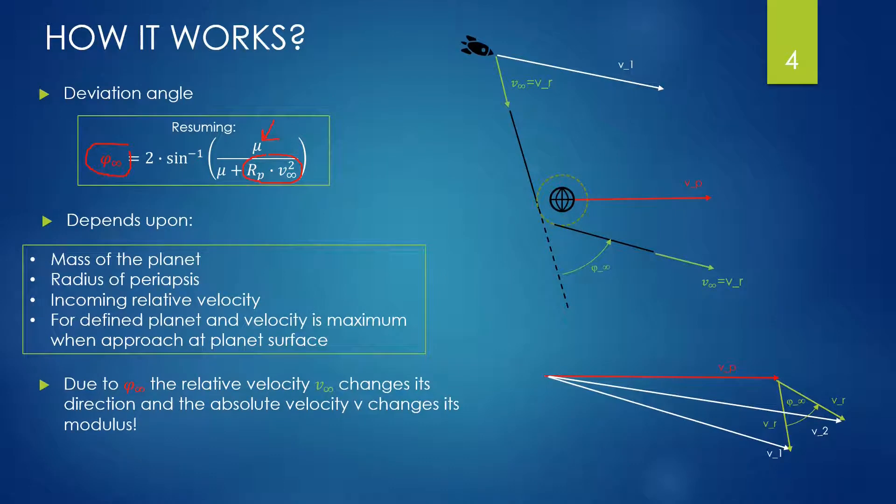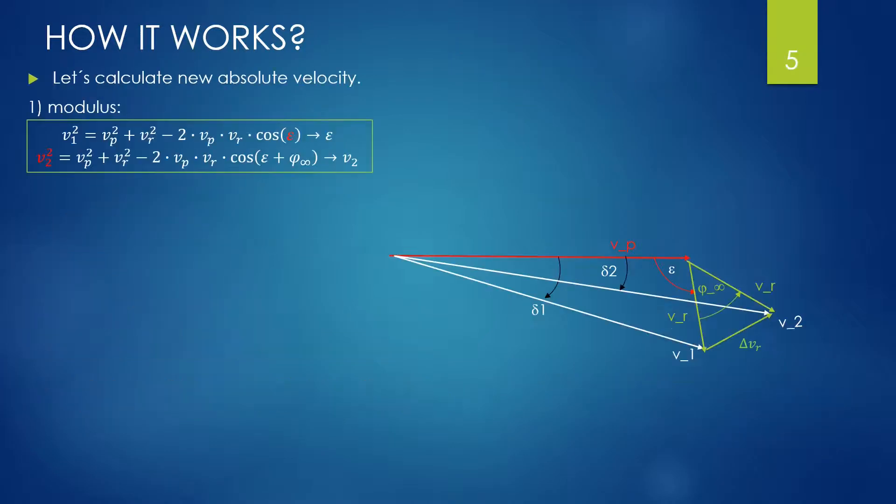We observe moreover that the modulus of the velocity V infinite stays constant, but the absolute velocity does not. It changes from V1 to V2. Let's calculate how it changes as a vector.